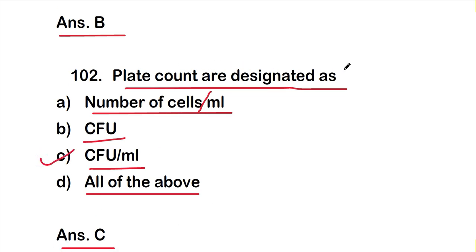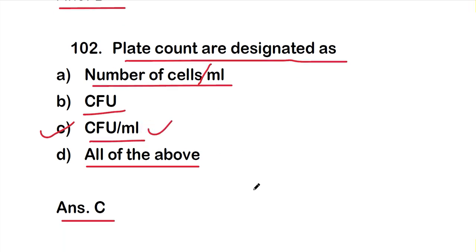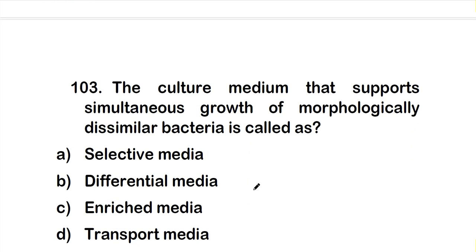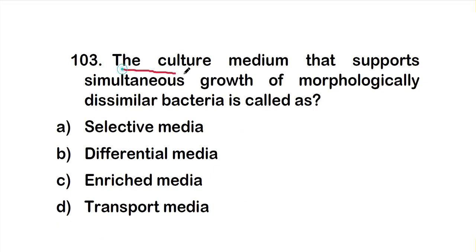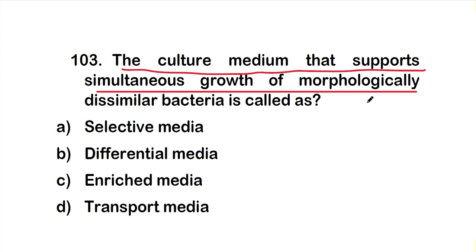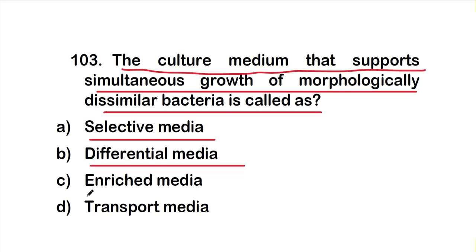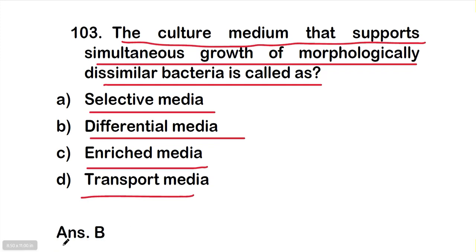Question 103: The culture media that supports simultaneous growth of morphologically dissimilar bacteria is called option A, selective media; option B, differential media; option C, enriched media; or option D, transport media. The right answer is option B, differential media.